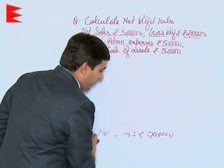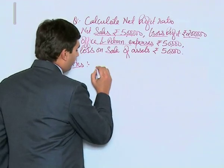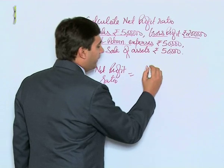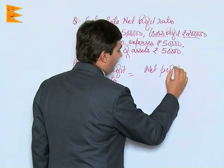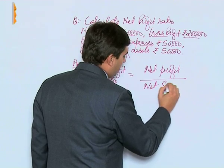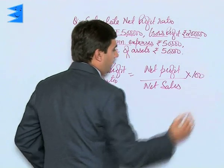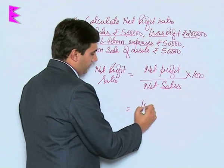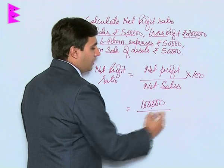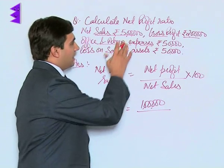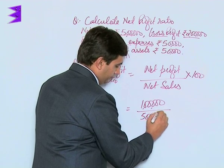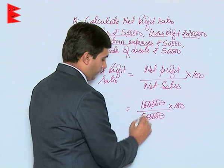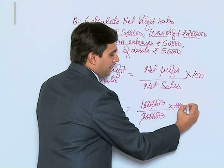The net profit ratio formula is: net profit upon net sales, into 100. Net profit is 1 lakh upon net sales of 5 lakhs, into 100.